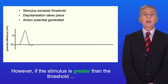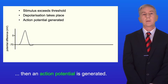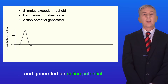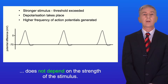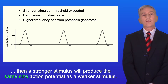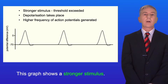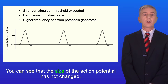However, if the stimulus is greater than the threshold, then an action potential is generated — you can see in this graph that the stimulus has exceeded the threshold. Secondly, the size of the action potential does not depend on the strength of the stimulus. As long as the threshold is exceeded, a stronger stimulus will produce the same size action potential as a weaker stimulus, as shown in this graph.